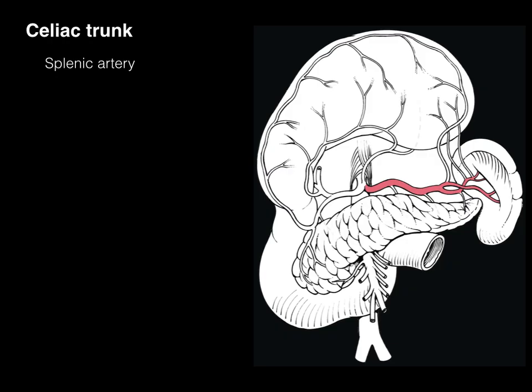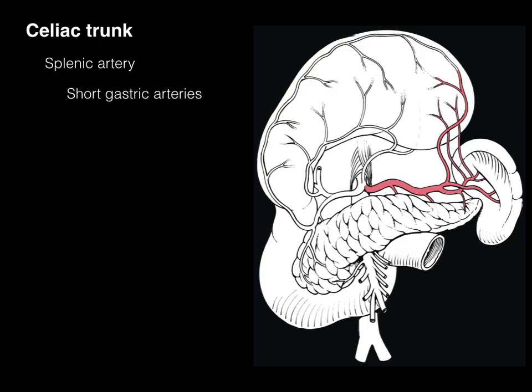The splenic artery gets its name from where it goes — the spleen. Most arteries are named for where they go. The splenic artery courses in a curly pathway into the hilum of the spleen. Along the way it sends off pancreatic branches that supply the body and tail of the pancreas. It also gives rise to the left gastroomental artery, sometimes called the left gastric epiploic artery, which courses along the greater curvature of the stomach within the greater omentum. Short gastric arteries from the splenic supply part of the fundus of the stomach.